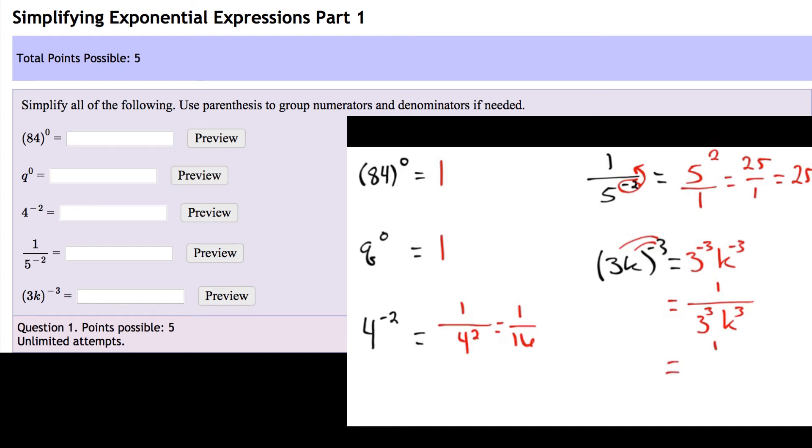And we can simplify this one more time. 1 over 3 to the power of 3 is 3 times 3 times 3. So that's not 9, that's actually 27. And then k to the power of 3.